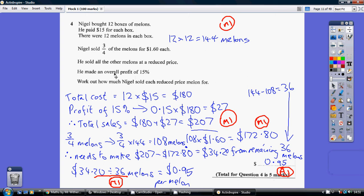Now we're being asked, he made an overall profit of 15%, work out how much Nigel sold each reduced price melon for. So first things first, we really need to work out what our overall profit of 15% is going to be. So this profit is on top of the cost. So you have your cost and then the percentage profit is how much on top of that cost is your profit. So starting point, we need to work out our total cost.